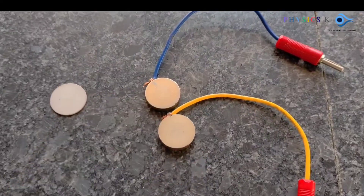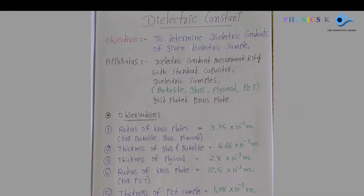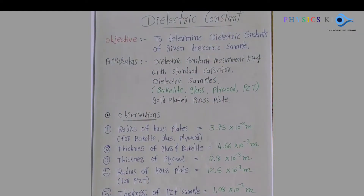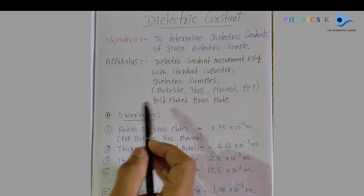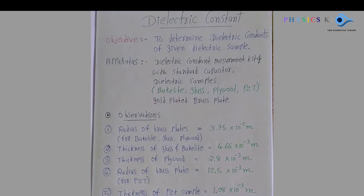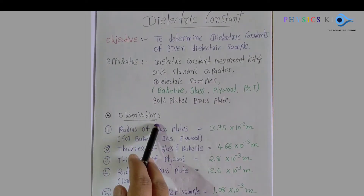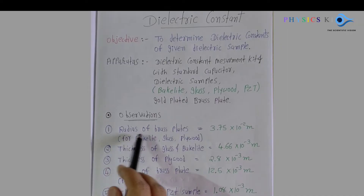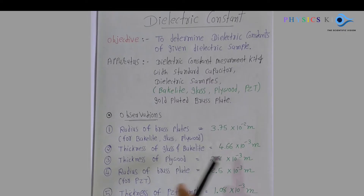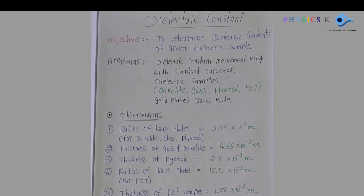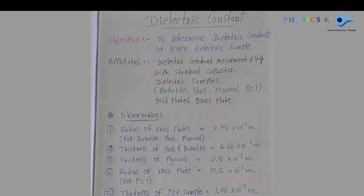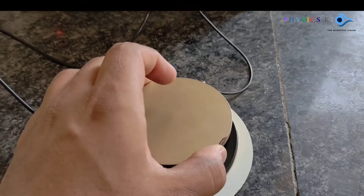The experiment title is 'Dielectric Constant' and the objective is to determine the dielectric constant of given dielectric samples. We have four different types of samples: bakelite, glass, plywood, and PZT. In the observation table, we already know the radius and thickness of each dielectric sample, which are used in the calculations.